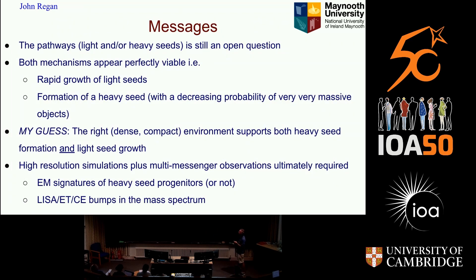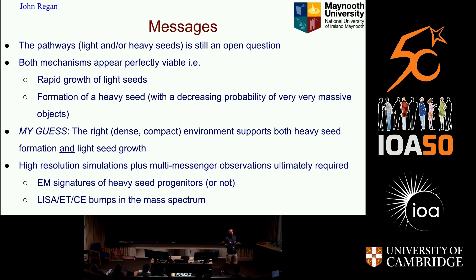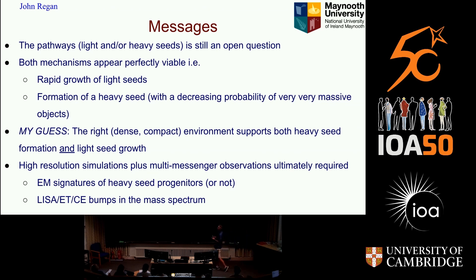The messages to take home: the pathway is still open, and both mechanisms seem totally viable. I don't think anybody will dispute that you probably get light seed growth. I know there are people who don't believe in heavy seeds, but as far as we can tell they seem perfectly viable too, and it might be that we need them. My guess is that the right dense, compact environment allows you to both grow light seeds and form and grow heavy seeds — I don't see why you can't have both.